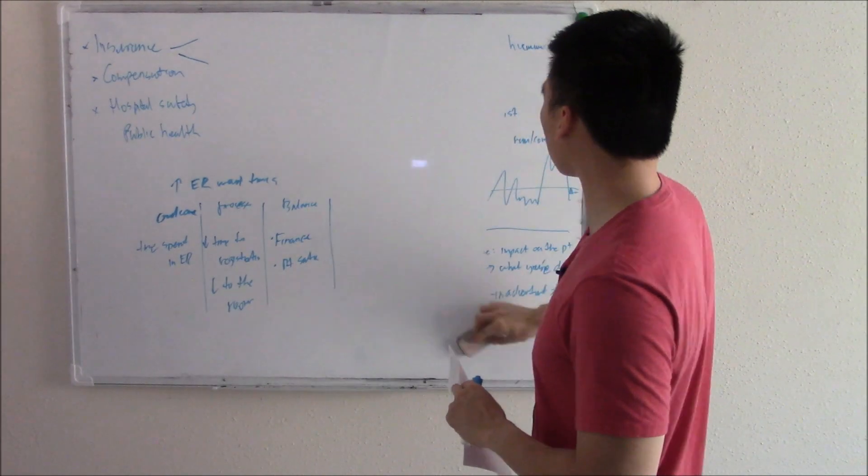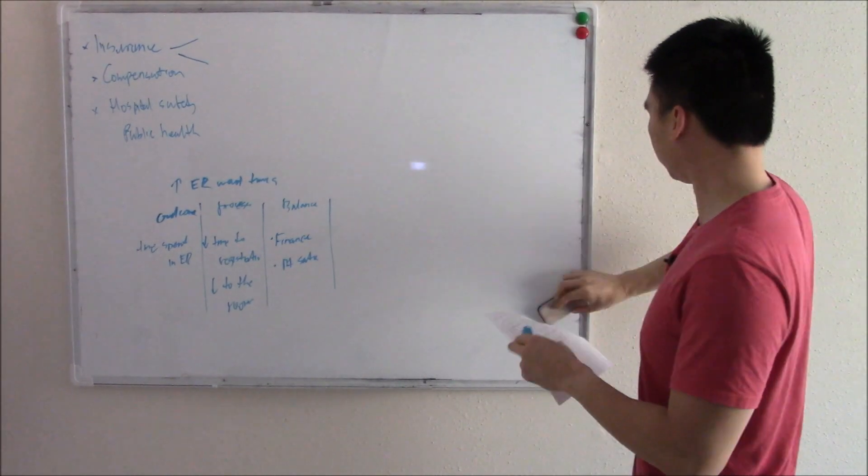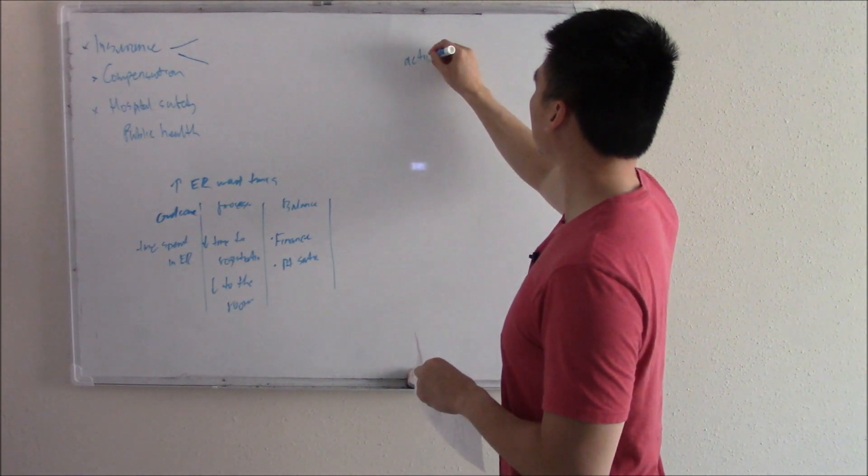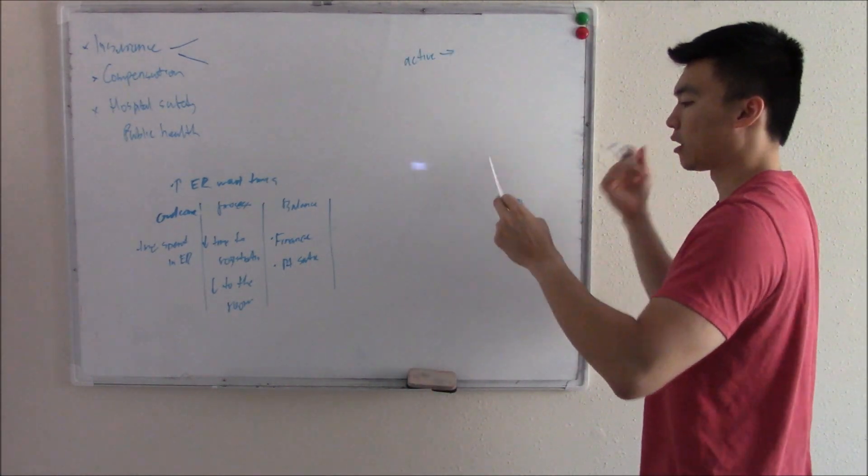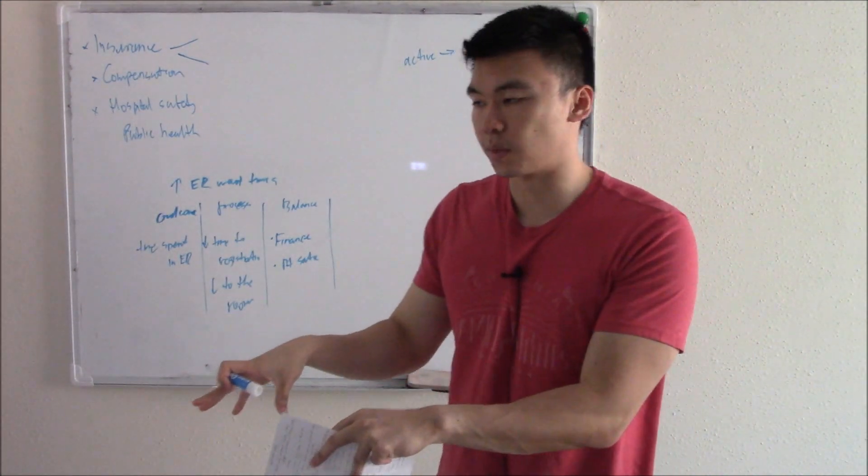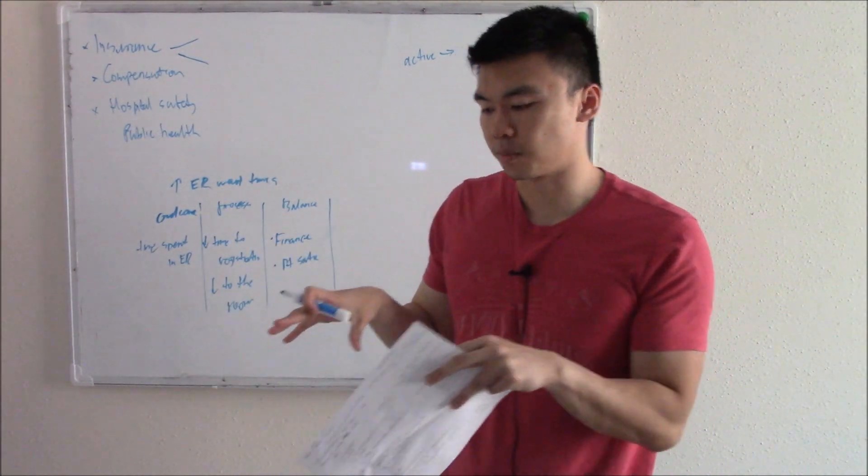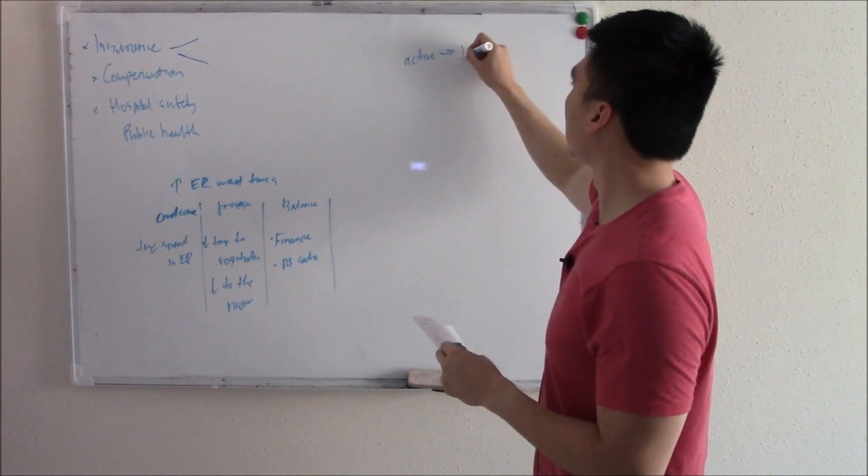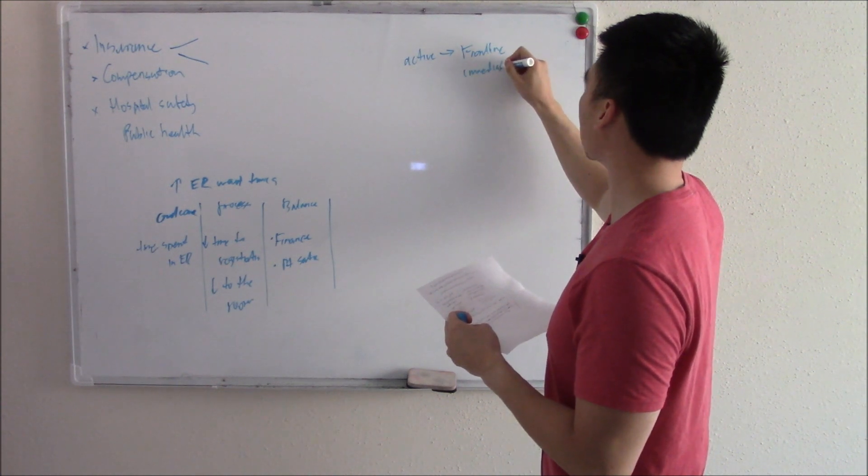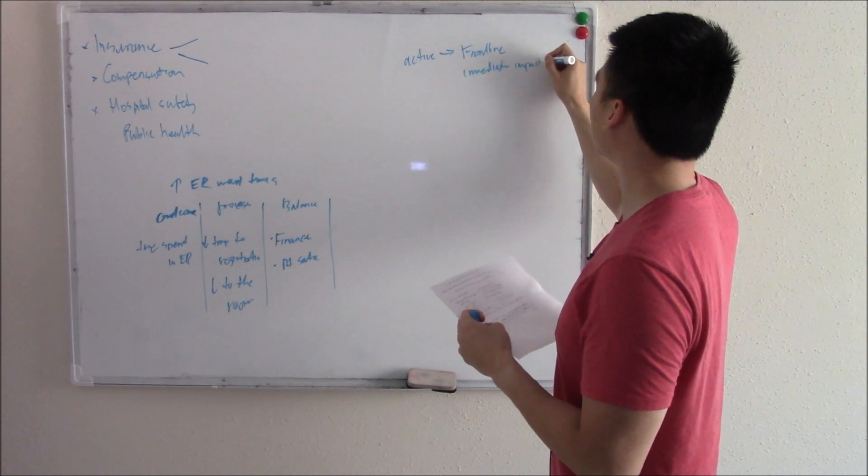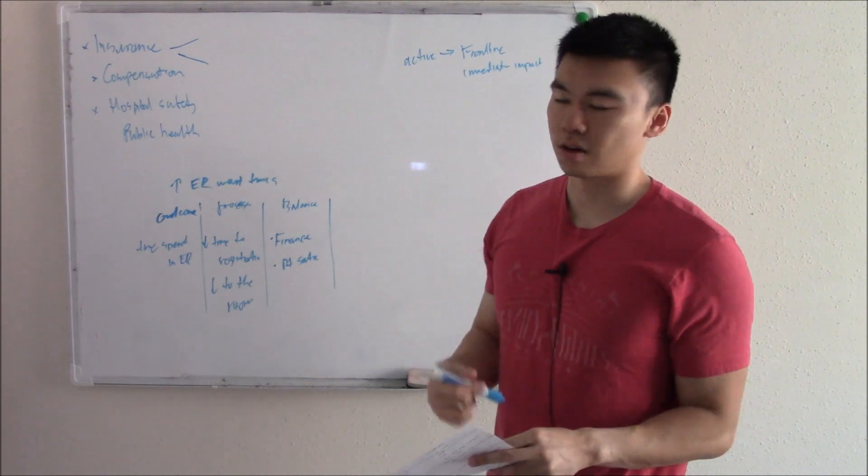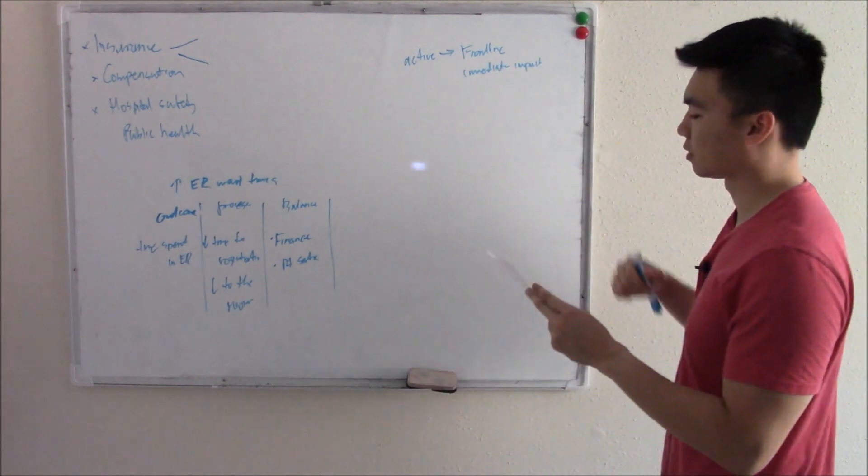And there are different types of error. There's active error. Here's when the error is done by a frontline provider. Maybe the nurse actually taking care of the patient or the doctor actually taking care of the patient or the PT actually taking care of the patient. So frontline. Immediate impact. That's not good. So nurse gives the wrong drug, doctor orders the wrong drug. Frontline provider, causes immediate impact.